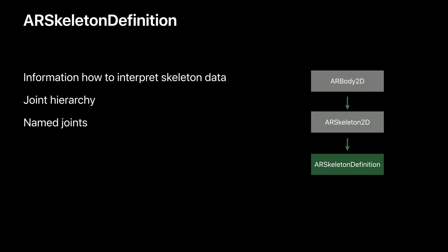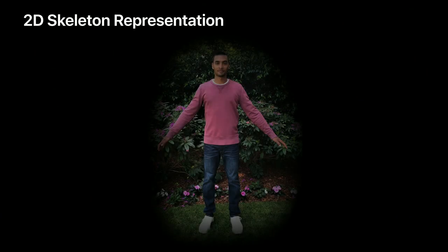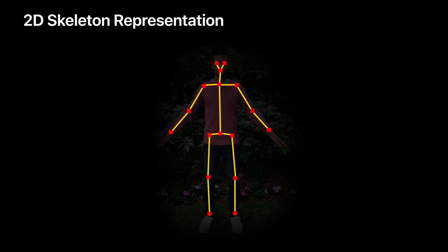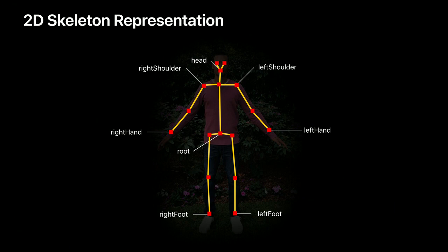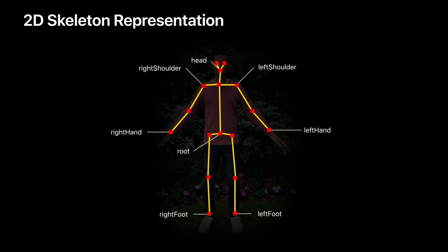You will also be provided with names for joints that can be used for easier access. Here's a person detected in our frame and the 2D skeleton provided by ARKit. Important joints are named to make it easy to find the position of a particular one you're interested in — for example the head or the right hand.